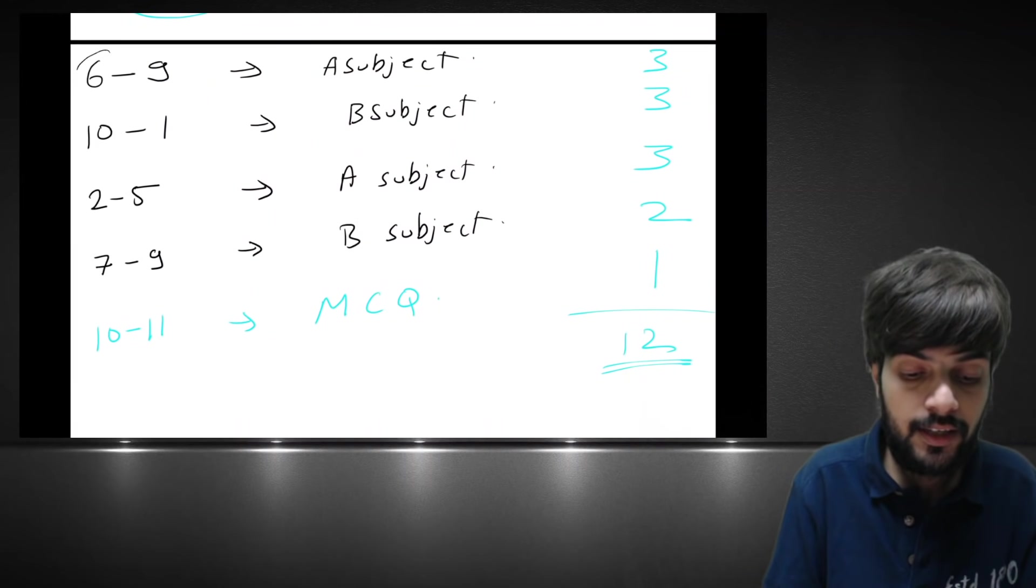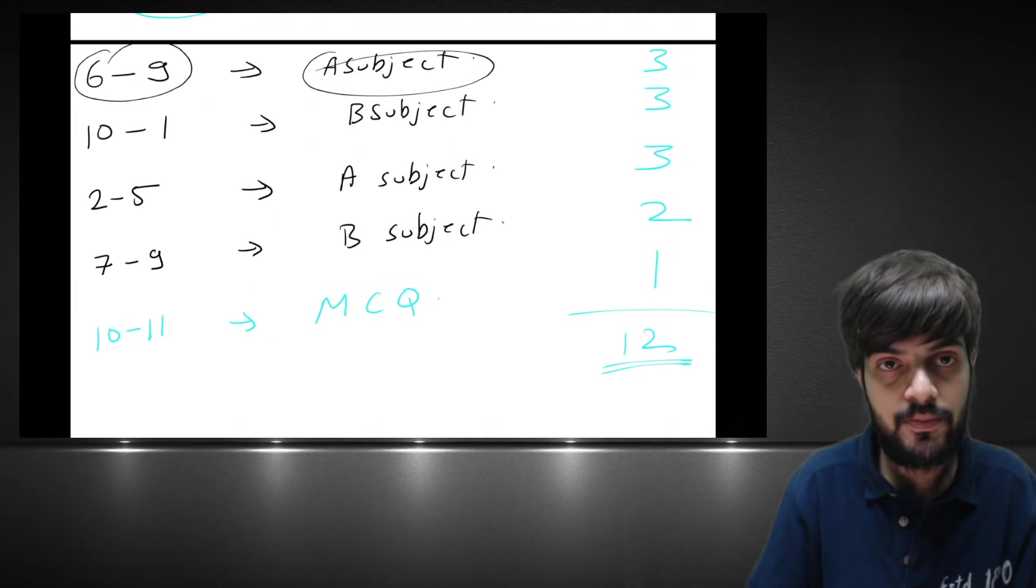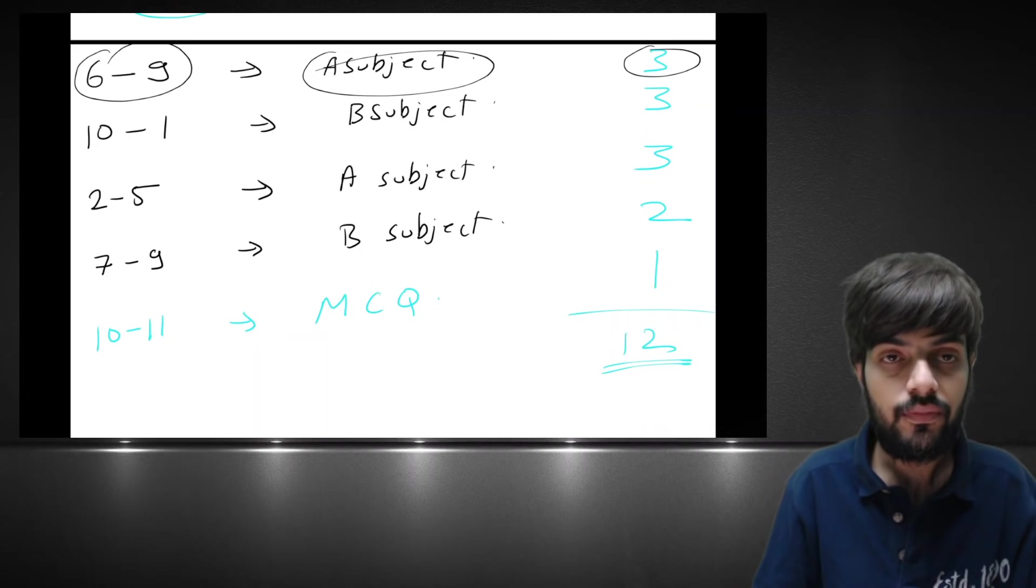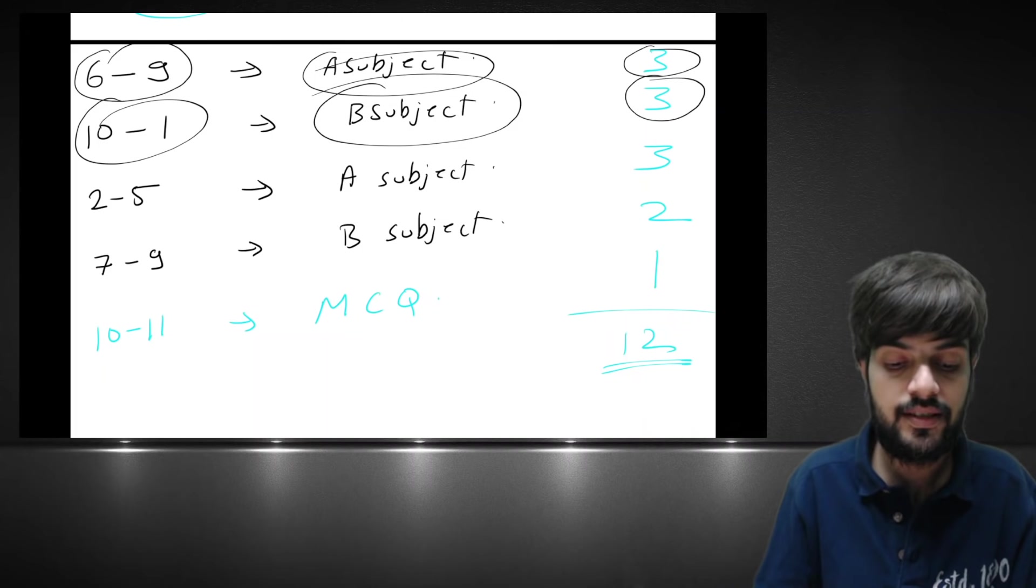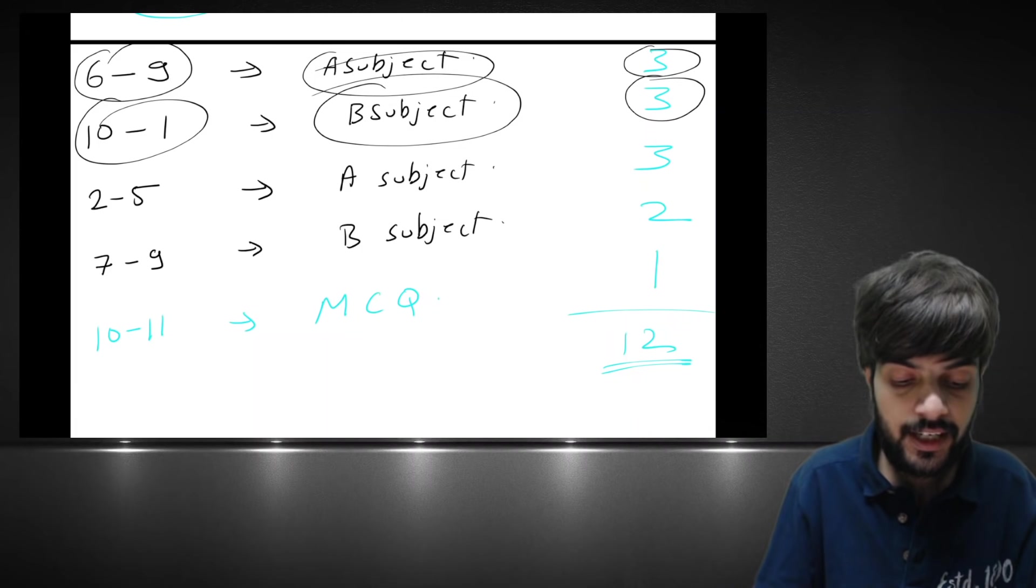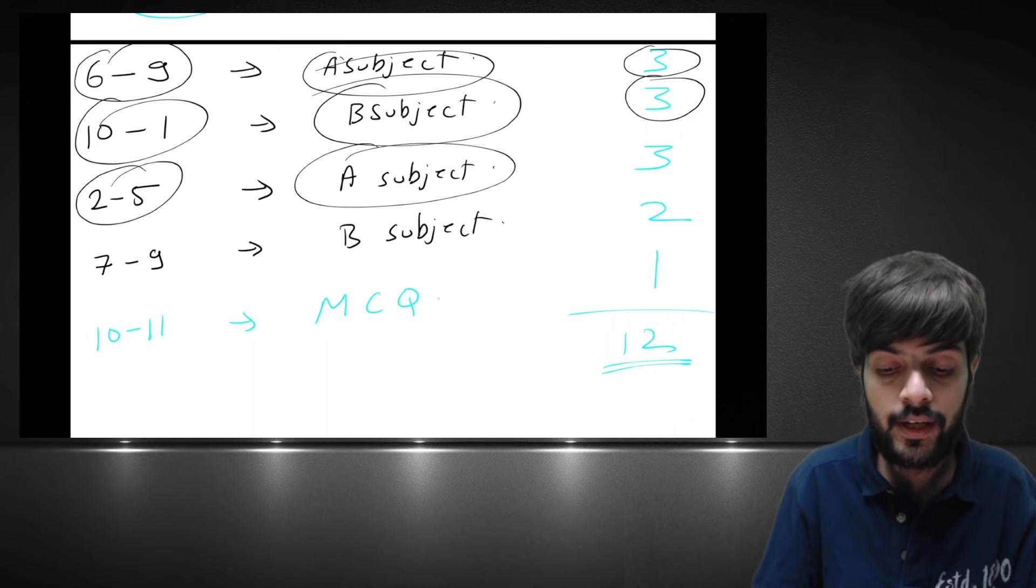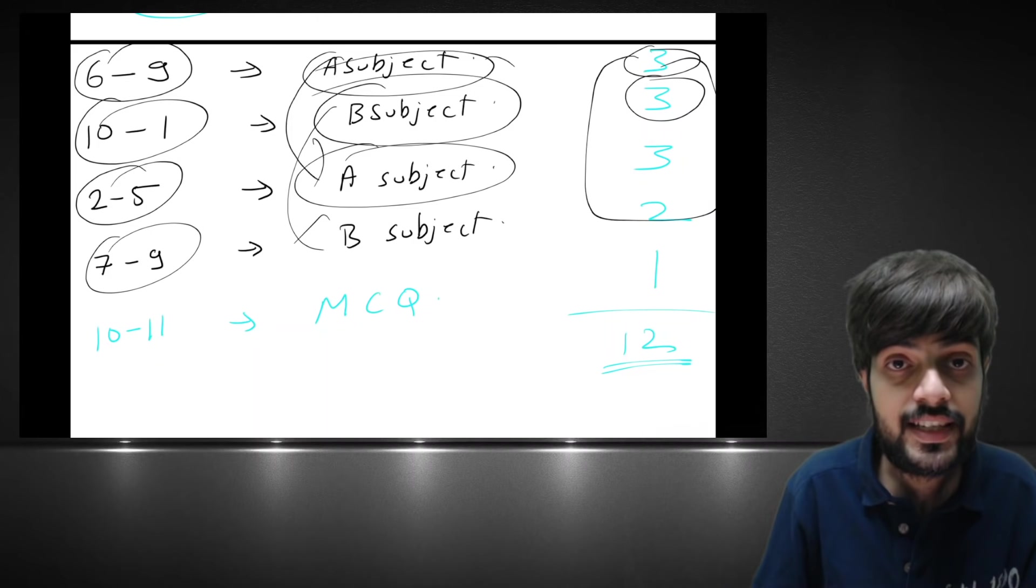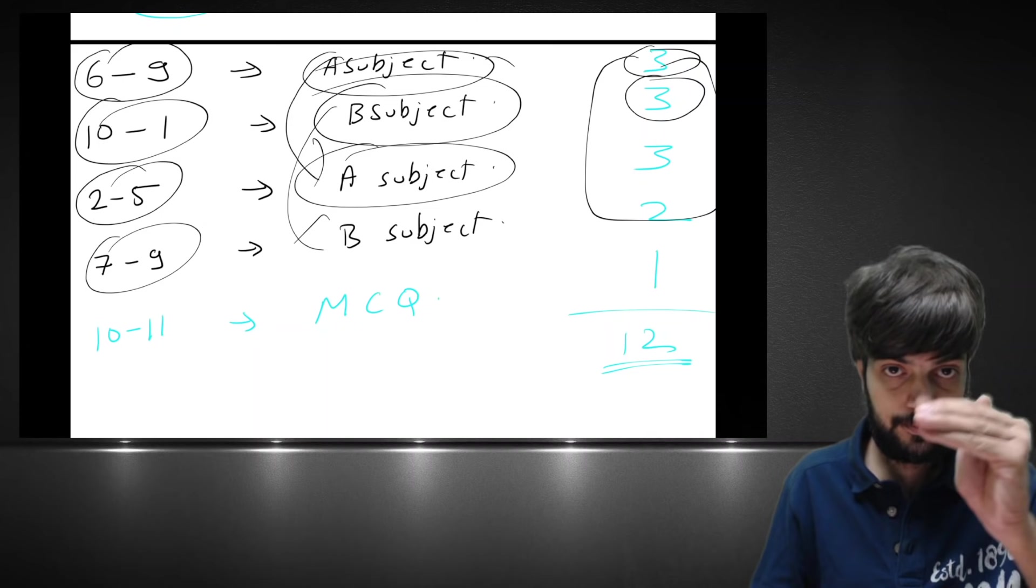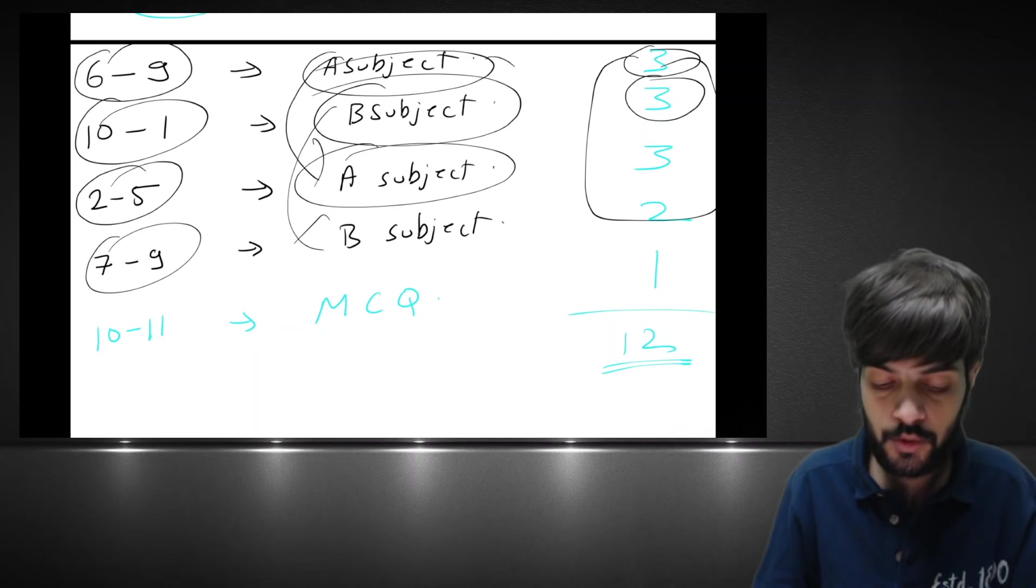So 6 to 9 early morning, you can do first subject for 3 hours. Then 10 to 1 again you can pick up other subject which is for 3 hours. Then again you can have lunch, take break, from 2 to 5 again you can take A subject which you studied here. And 7 to 9 you can take B subject. So on and around we will study 11 hours. And 11 hours will be divided into two subjects.